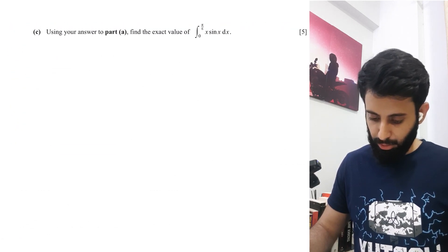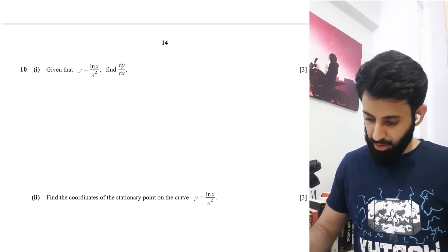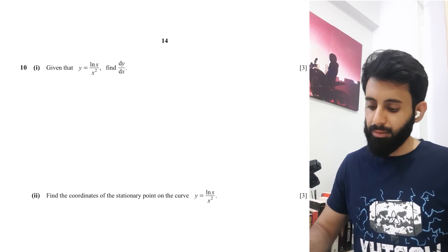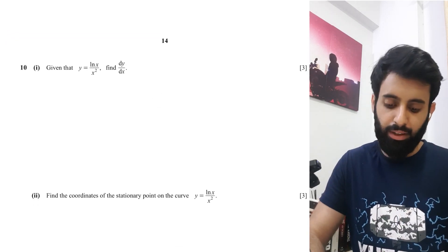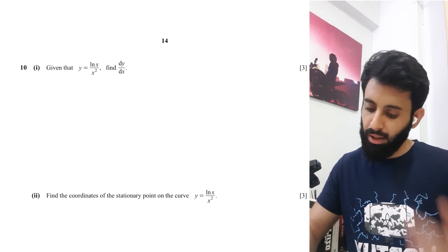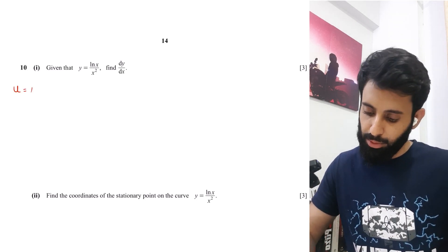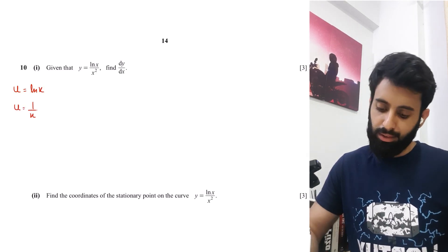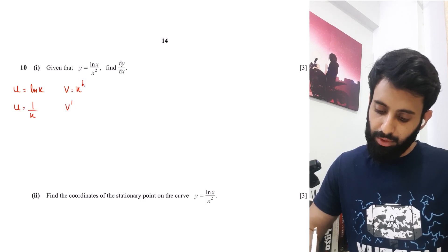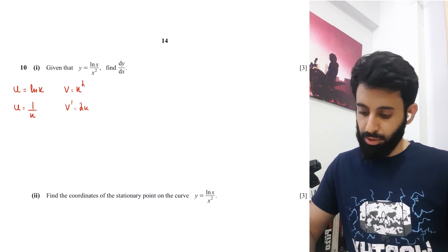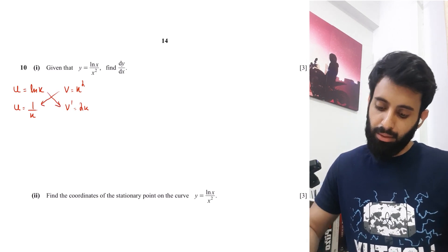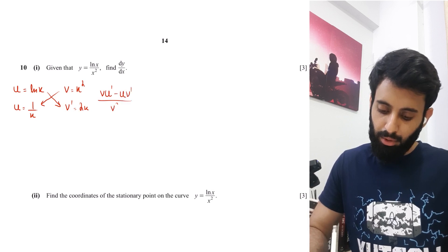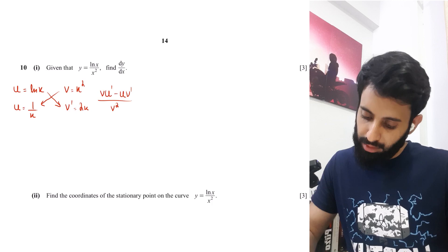Moving to the next question: given y = ln(x) / x^2, find dy/dx. We'll use quotient rule. Setting u = ln(x), so u' = 1/x, and v = x^2, so v' = 2x. Quotient rule gives (v·u' minus u·v') / v^2.